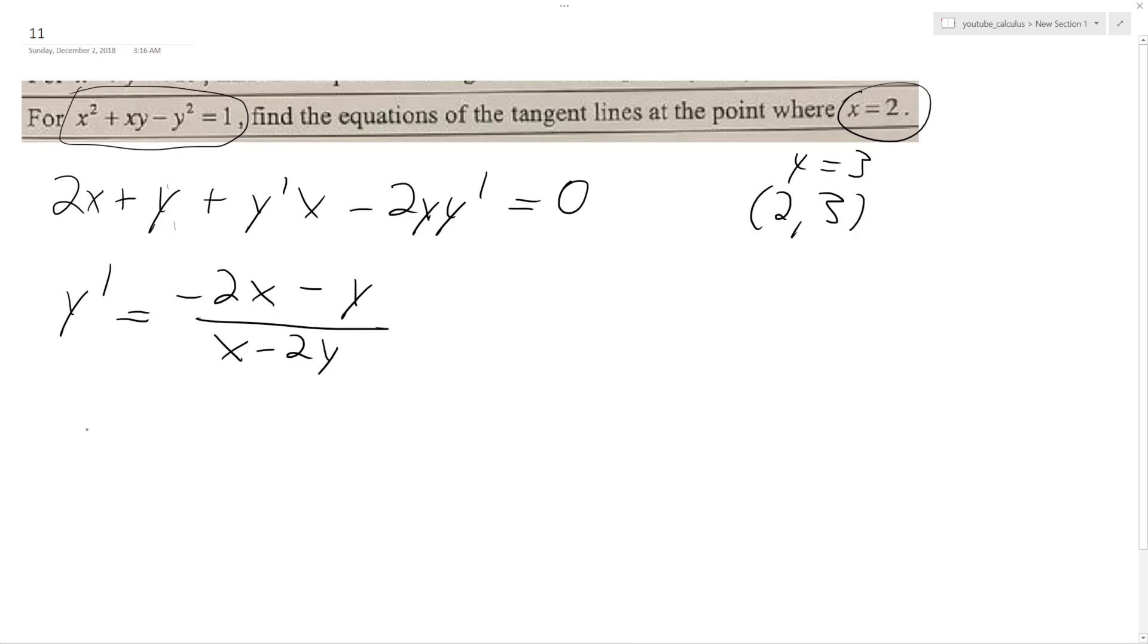Okay, so y prime of negative 2 times 2 minus 3 over 2 minus 6 gets me a slope of 7 over 4.